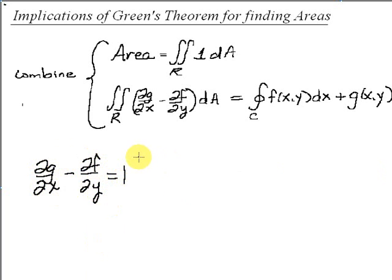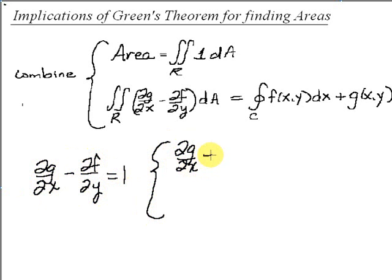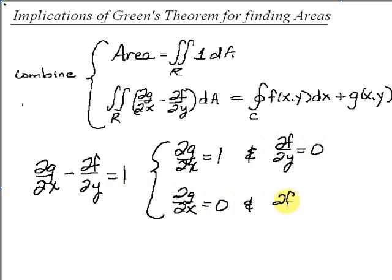What we need is either for ∂g/∂x to be 1 and ∂f/∂y to be 0. There are many values that could cause this to equal 1, but for convenience we're going to take one of these to be 0. So we're going to explore two possibilities: one is letting ∂g/∂x equal 1 and ∂f/∂y equal 0, or letting ∂g/∂x be 0 and ∂f/∂y be negative 1 to get a positive 1.